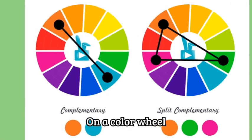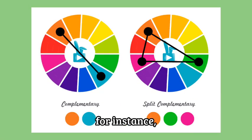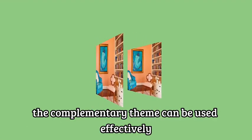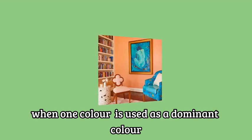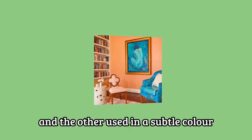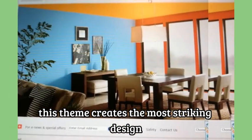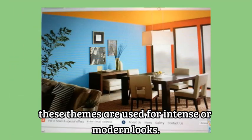On a color wheel, complementary colors are directly opposite each other. For instance, red and green are complementary colors. The complementary theme can be used effectively when one color is used as a dominant color and the other used in a subtle color based on the complementary color hue. This theme creates the most striking design impressions and is used for intense or modern looks.